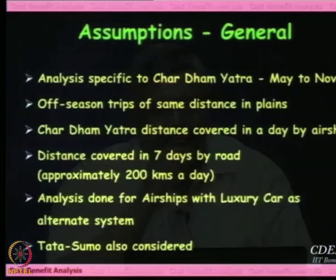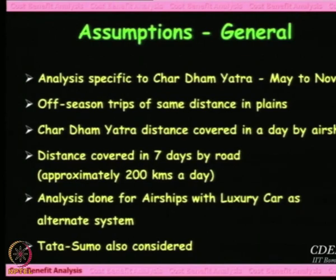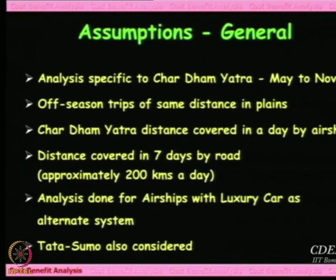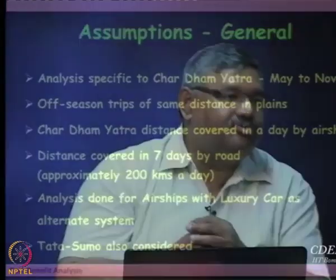Now let us look at the assumptions made in this study. First, this analysis is specific to only Chardham Yatra — you cannot use it for Mumbai to Shirdi travel; that is a different market. Chardham Yatra happens only from May to November, but the airships and vehicles purchased will not remain idle from December to May. Maybe December is maintenance month, but January through April you cannot just keep transportation systems idling. So we assume the off-season will be used in some other areas.